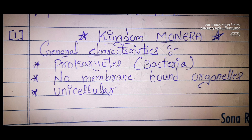In these five kingdoms, the first one is Monera. These Monerans are prokaryotes — prokaryotes means without a definite nucleus. All bacteria are included under Monerans. There are no membrane-bound organelles; the organelles present inside the cell do not bear membranes. Monerans are purely unicellular organisms — organisms whose body is made up of a single cell.